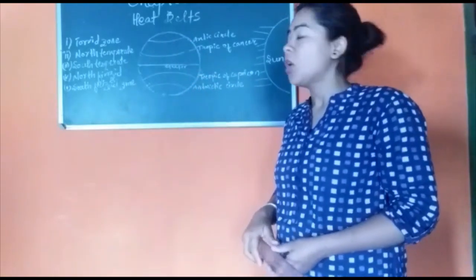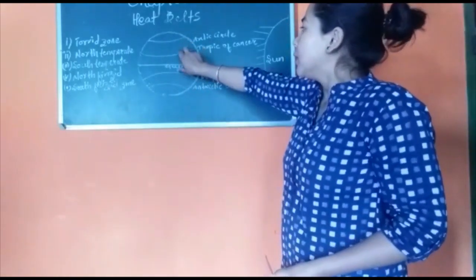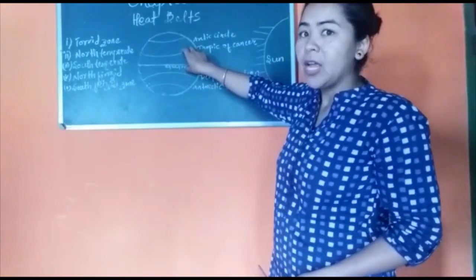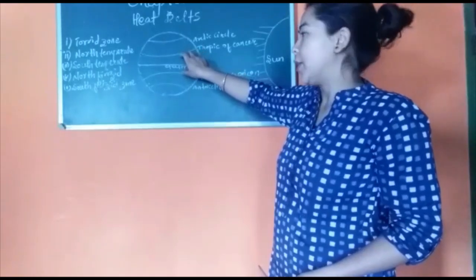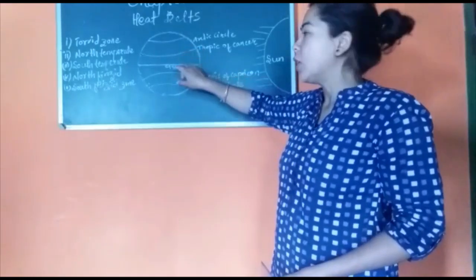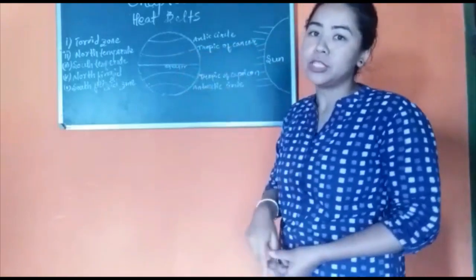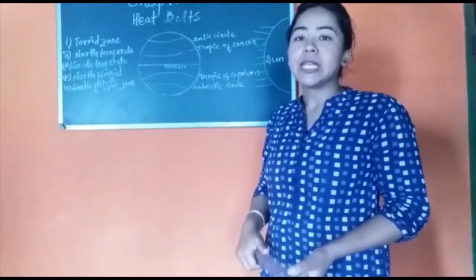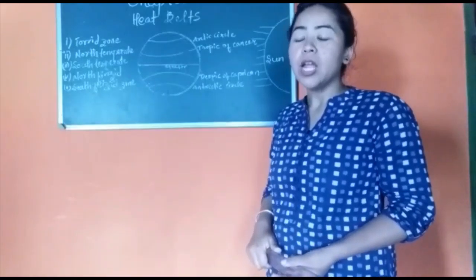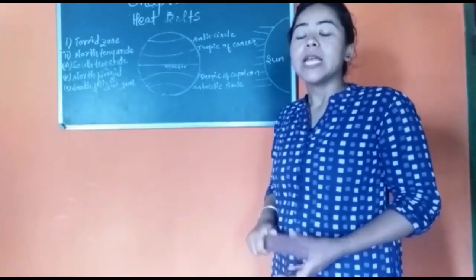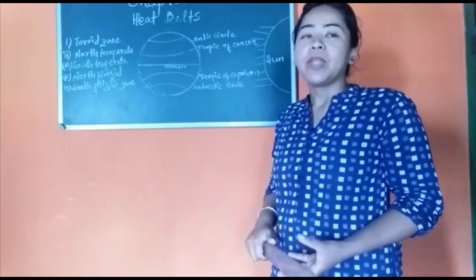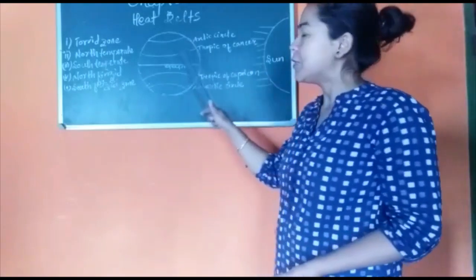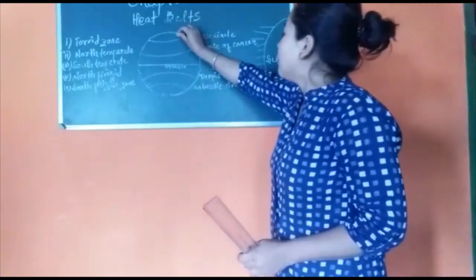The area which lies between the Tropic of Cancer and the Tropic of Capricorn is the hottest area of the world because this area receives direct or vertical rays of the sun. Vertical rays are hotter compared to slanting or oblique rays because vertical rays heat up a small area and heat it up more rapidly compared to slanting rays.